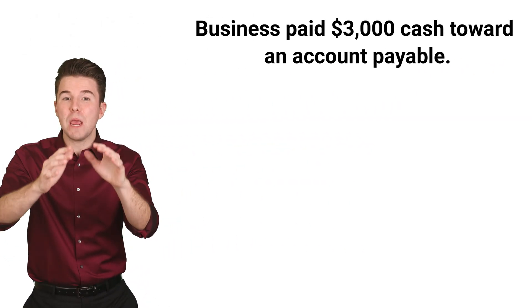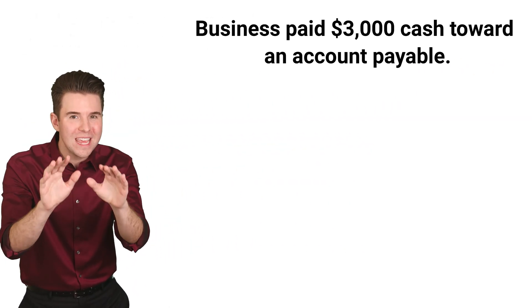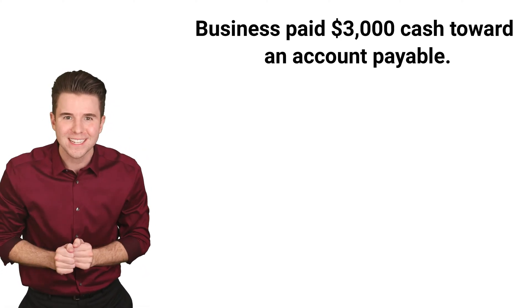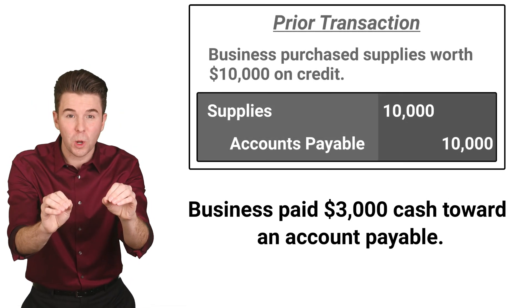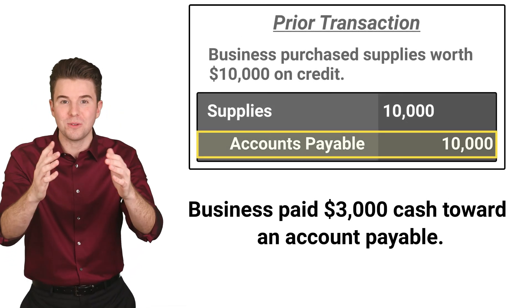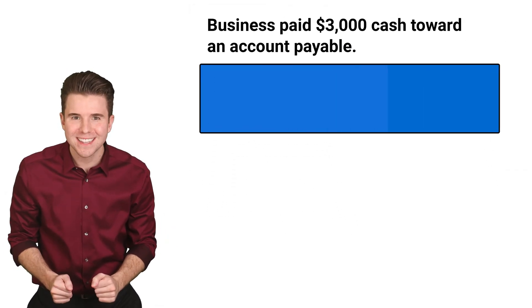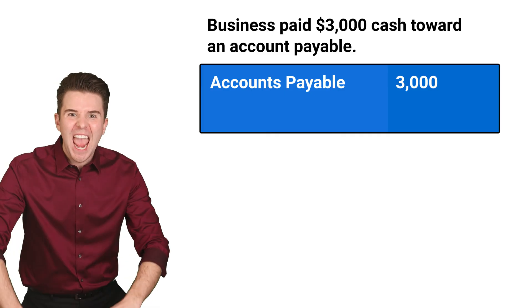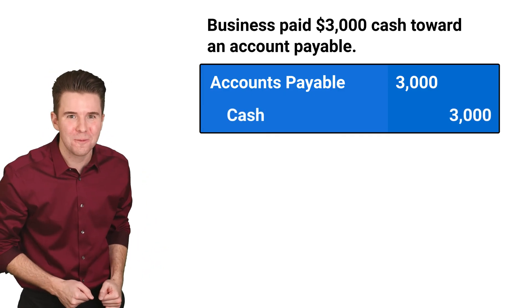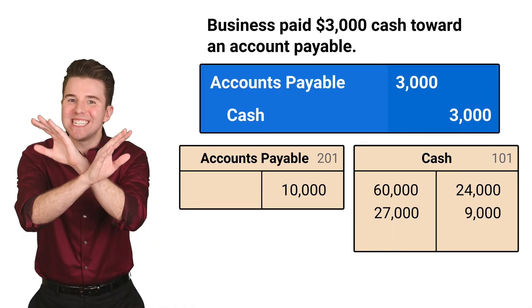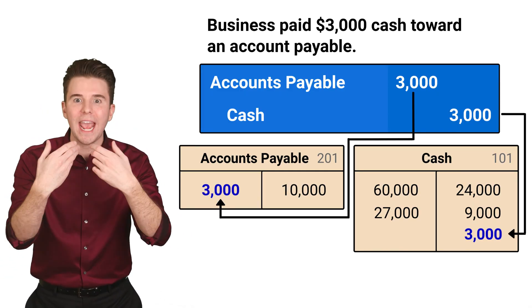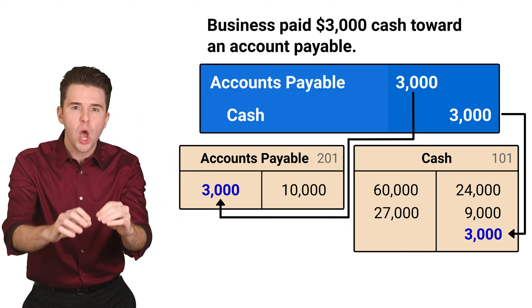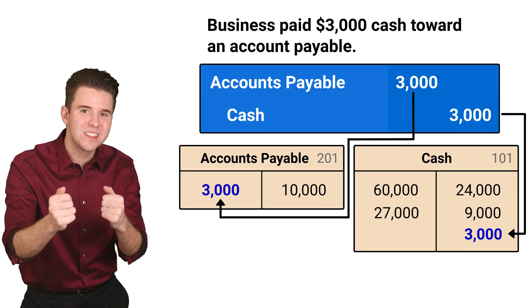Next, we make a partial payment of $3,000 cash for the supplies we purchased earlier on credit. If you remember, we initially recorded an accounts payable for that transaction. When making the partial payment, we debit accounts payable for $3,000 and credit cash for $3,000. This payment does not create an expense, even though cash flows out of the business. Instead, the expense will be recorded when we actually use the supplies.